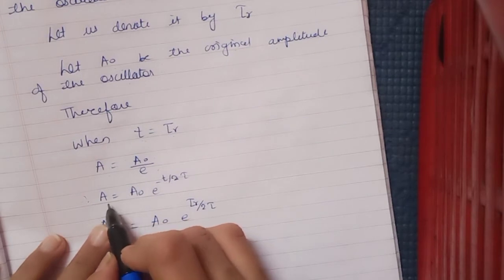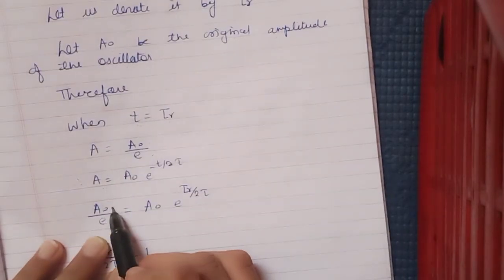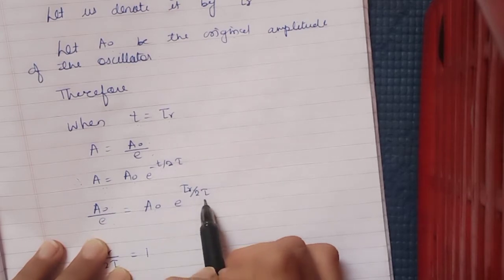the formula for amplitude: A = A₀e^(-t/2τ). Here A is A₀/e, so A₀/e = A₀e^(-τᵣ/2τ).